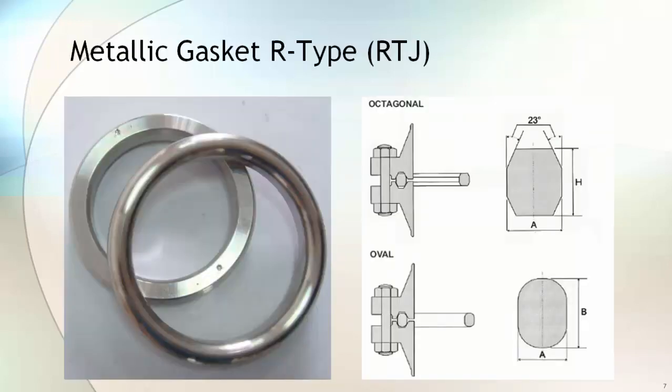There are two types of metallic gaskets used in RTJ flanges: one is octagonal and the other is oval type. You can see the difference in their cross-section as shown in the image.